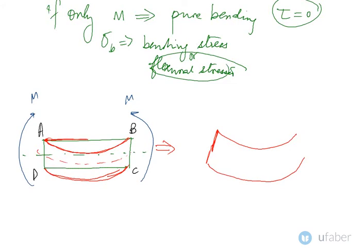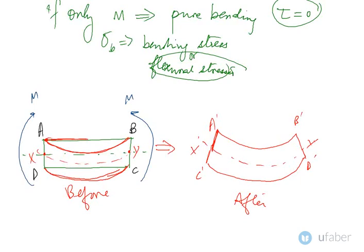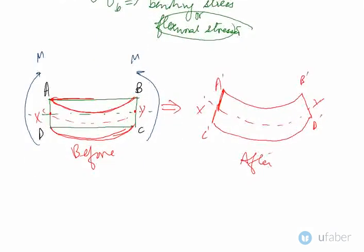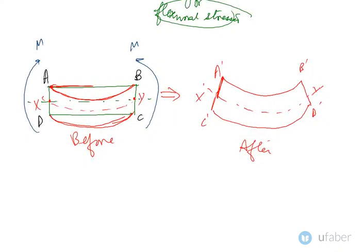This would become A dash B dash and this would become C dash D dash. Let's say these two points were named X and Y. This is the axis that we were talking about and this is X prime and Y prime. This is before bending and this is after bending. What is happening after bending, if you compare it with before bending, is that...